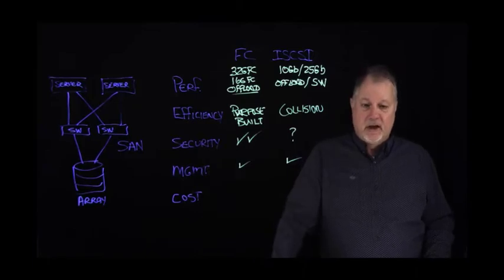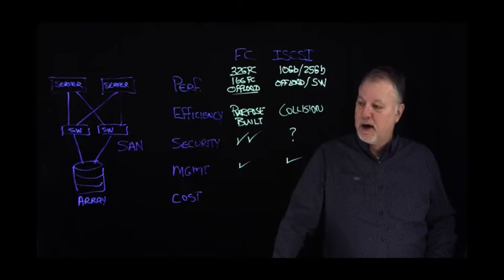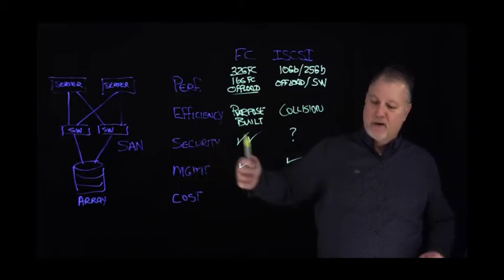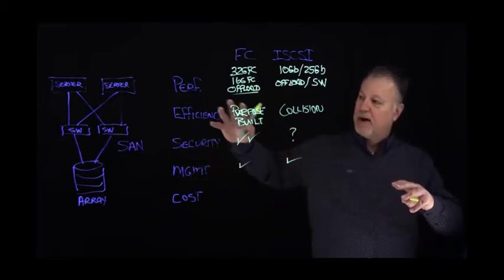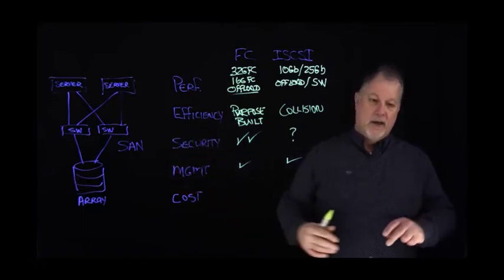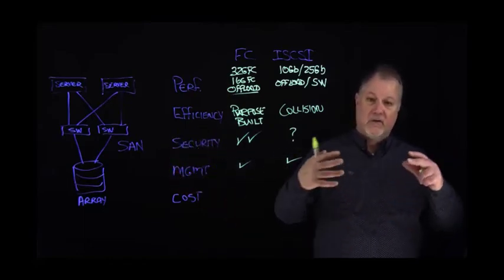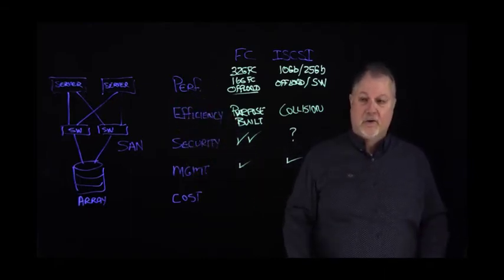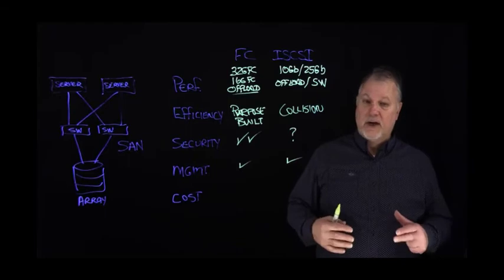In the case of HPE, management is done very elegantly in a couple of different software products that HPE provides. For 3PAR customers, they can use Smart SAN for 3PAR, which provides full Fiber Channel network management from the 3PAR array, does all the zoning, does all the management and orchestration of the Fiber Channel SAN from the 3PAR management console.